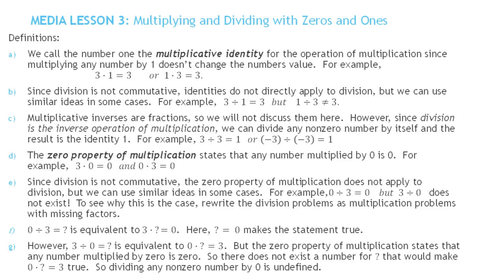In this video, we're going to look at multiplying and dividing with zeros and ones. Let's review a few definitions. We call the number 1 the multiplicative identity for the operation of multiplication, since multiplying any number by 1 doesn't change the number's value. For example, 3 times 1 is 3, 1 times 3 is 3. It doesn't matter what order you multiply by 1, the result is the original number.